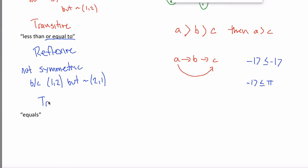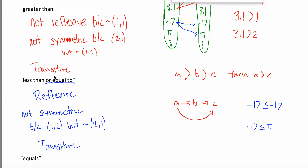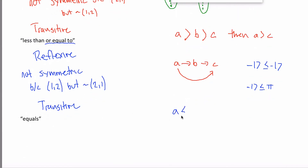What about transitive? Turns out 'less than or equal to' is transitive, and the argument is similar to 'greater than.' If A is less than or equal to B and B is less than or equal to C, then A must be less than or equal to C. If I make less than or equal to the same amount as my brother, and my brother makes less than or equal to the same amount as my sister, then I must make less than or equal to the amount my sister makes. So 'less than or equal to' is reflexive, not symmetric, and transitive.